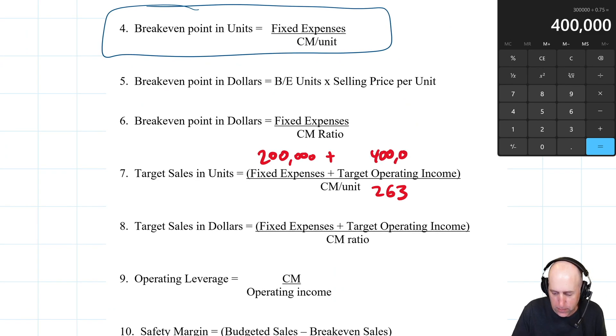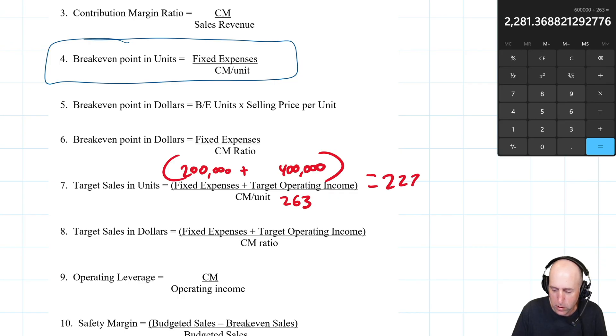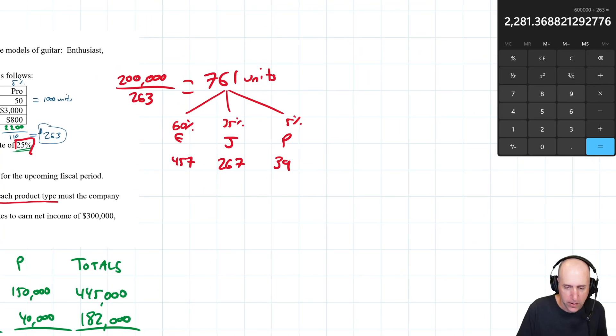The math is 200,000 plus 400,000 divided by 263, which gives me 2282 units. That's how many units I need to sell to make 400,000 in net income. But I gotta say, which 2282 do I sell?